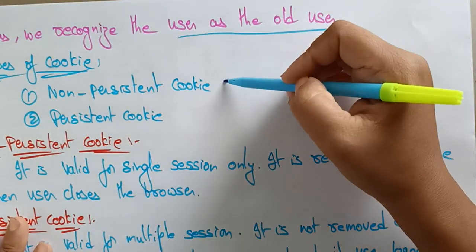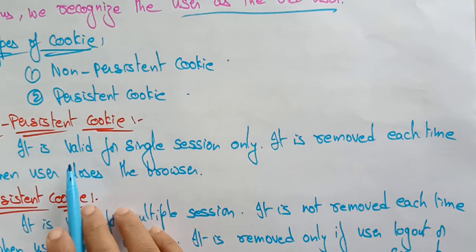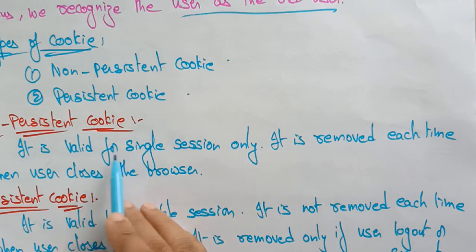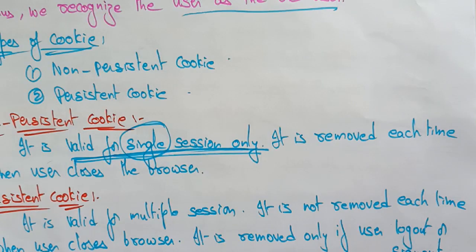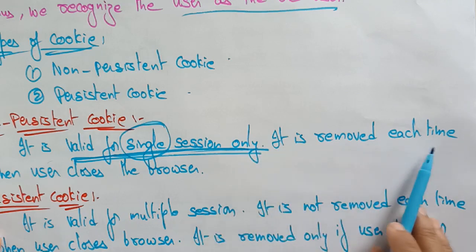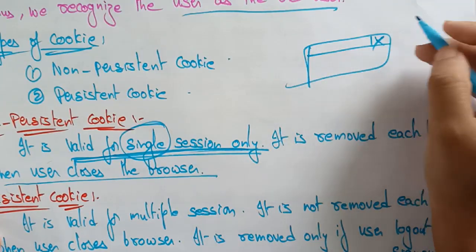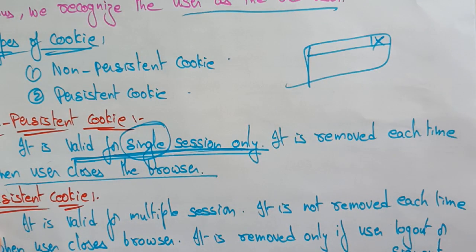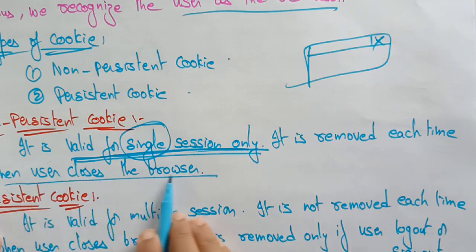There are two types of cookies: non-persistent cookies and persistent cookies. A non-persistent cookie is valid for a single session only. It is removed each time when the user closes the browser. So whenever you close the browser, that cookie will be lost — that is what we call a non-persistent cookie.